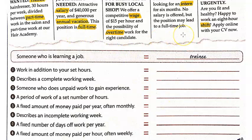I'm going to go ahead and play the audio so you can practice speaking. We're going to start with the example. Trainee. Number one: overtime. Number two: full-time. Number three. Number four: shift. Number five: salary. Number six: part-time. Number seven: annual vacation. And number eight: wage.